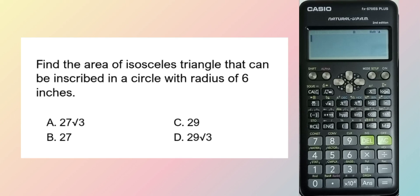Find the area of isosceles triangle that can be inscribed in a circle with a radius of 6 inches. So what is the formula?